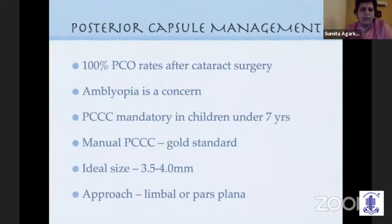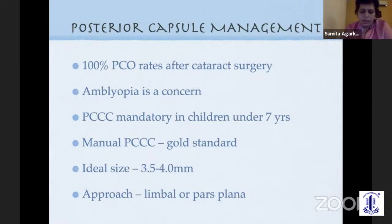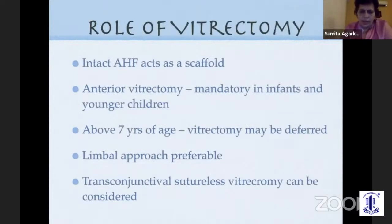For posterior capsule management, PCO rates are 100% in children — the younger the child, the earlier the PCO, and amblyopia is a concern. PCO can undo a beautifully done surgery within weeks or months. Manual posterior continuous curvilinear capsulorhexis (PCC) is probably the gold standard, with ideal size around 3.5 to 4mm. You can approach it limbally or via pars plana. Vitrectomy is mandatory in younger children; above 7 years, you can defer it. The newer 23-gauge vitrectomy is far less challenging than earlier.